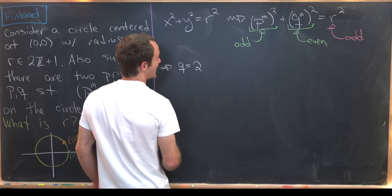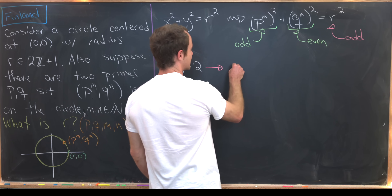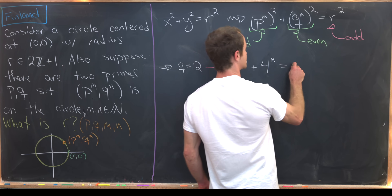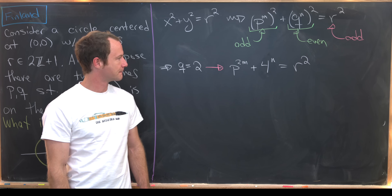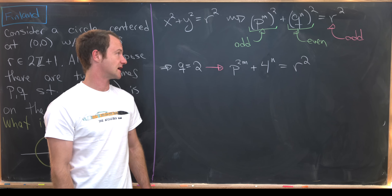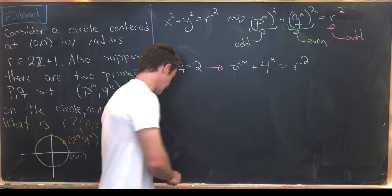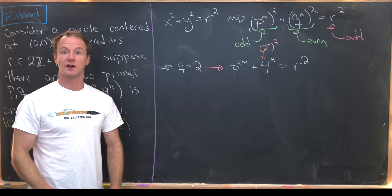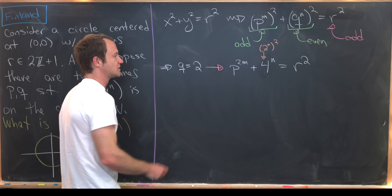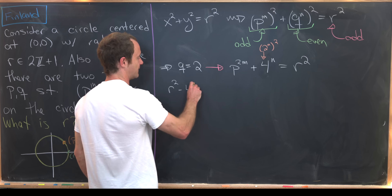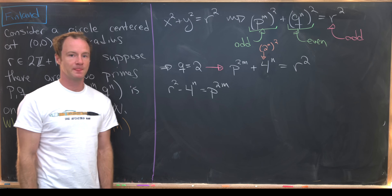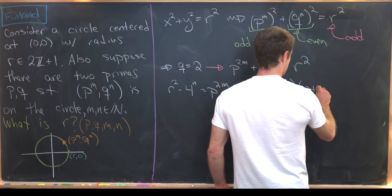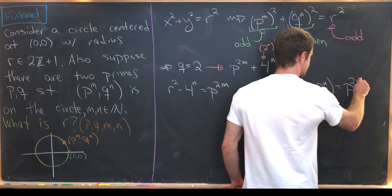We loop q = 2 back into our equation, giving us p^(2m) + 4^n = r², using the fact that 2² = 4. Notice we have a perfect square on the right and two perfect squares on the left, since 4^n = (2^n)². Moving one term over gives a difference of squares: r² − 4^n = p^(2m), which factors as (r − 2^n)(r + 2^n) = p^(2m).